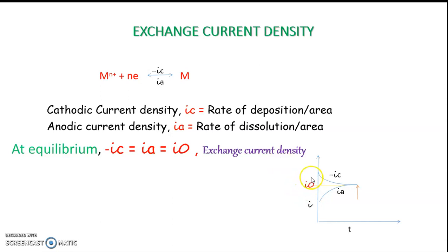I₀ is obtained when the rate of deposition and the rate of dissolution become equal. So the exchange current density is a unique situation at a particular temperature and pressure on a metal surface for that particular half-cell reaction. It is a major kinetic parameter which determines the rate of the electrode process. Again, this is for a single electrode system, not for a complete cell.